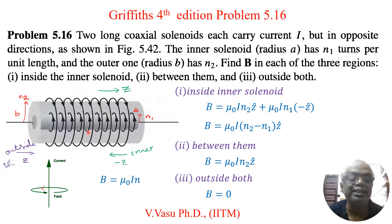Inner solenoid you have a number of turns is n1. So mu naught I n1. But remember that it is along negative Z direction. So I have used minus Z hat.